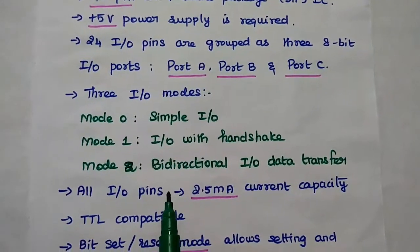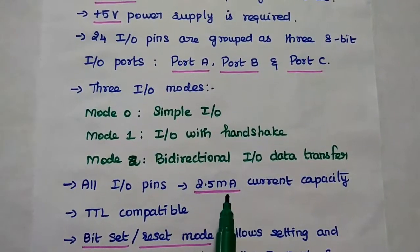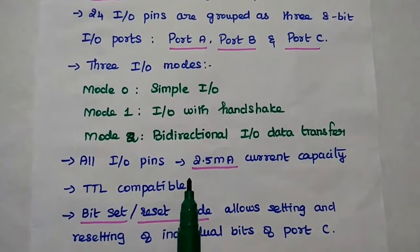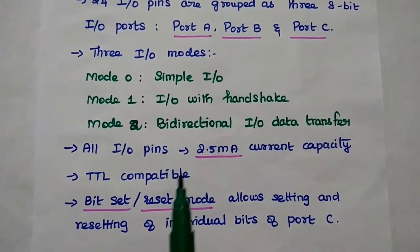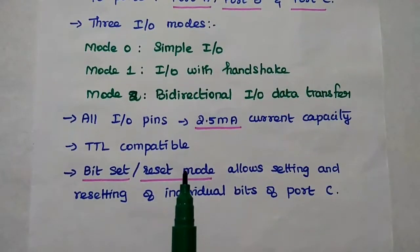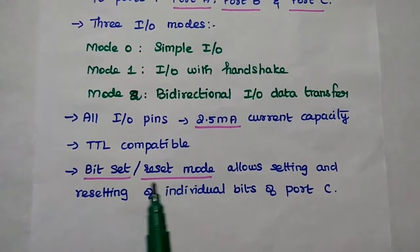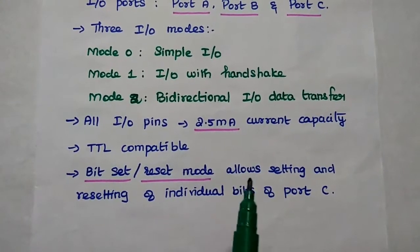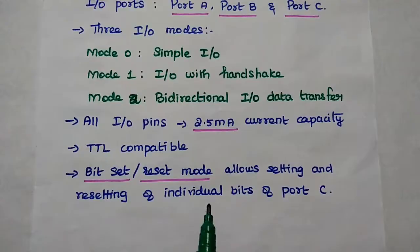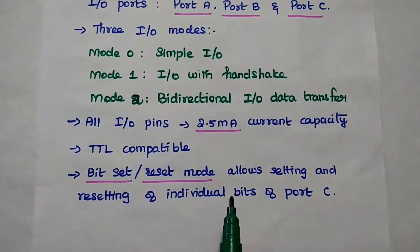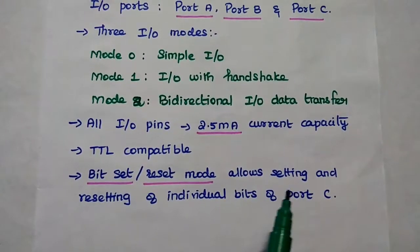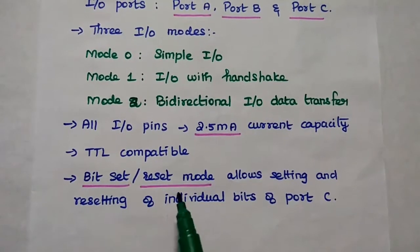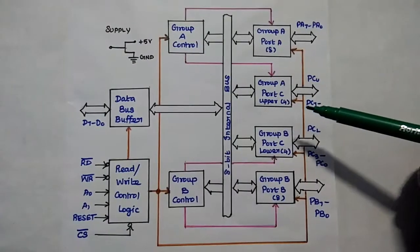All input/output pins have 2.5 milliamps current capacity. It is TTL compatible, that is, transistor-transistor logic compatible. It has a bit set or reset mode which allows setting or resetting of individual bits of Port C. Port C is thus controlled based on BSR mode, that is, bit set or reset mode.